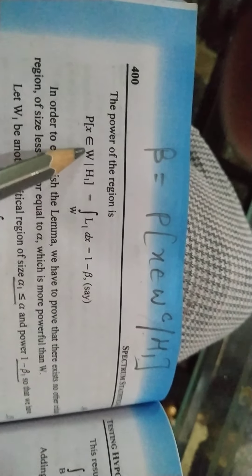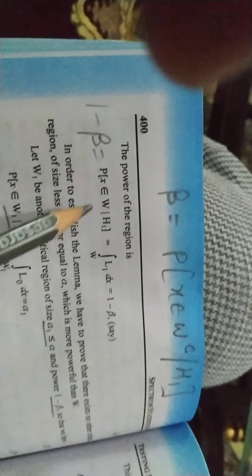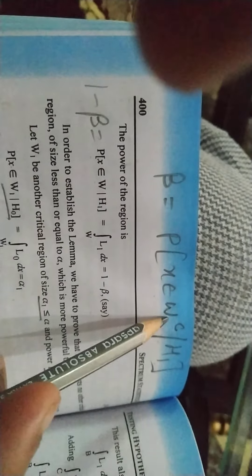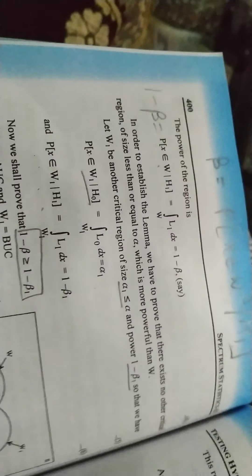So if we take 1 minus, it will become 1 minus beta. If you take 1 minus beta, what does power of region mean? 1 minus beta. So if we take 1 minus to complement, it will be W. So we have written this as L1. So this is my 1 minus beta I have written here. Now we have to prove this.